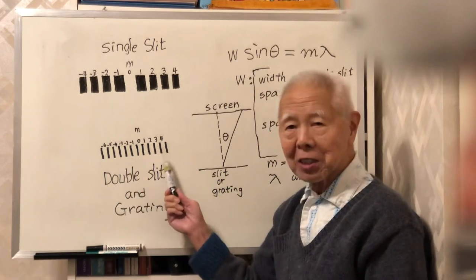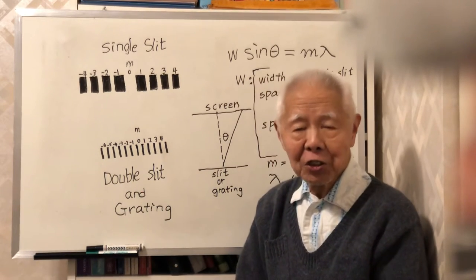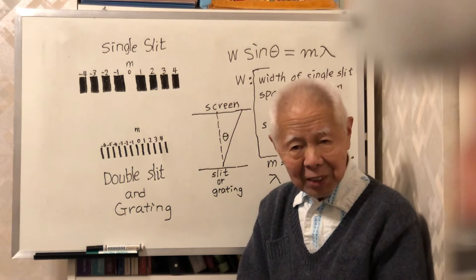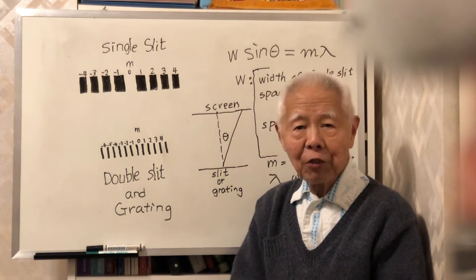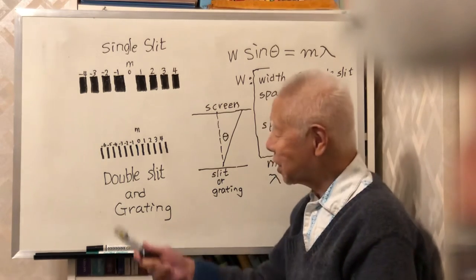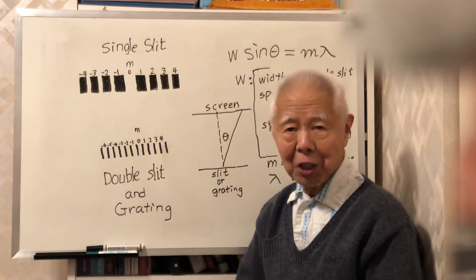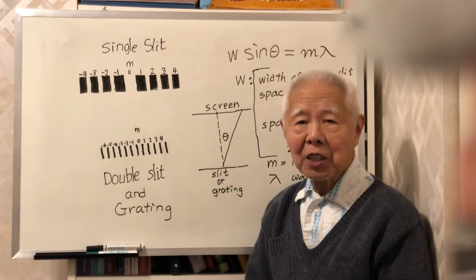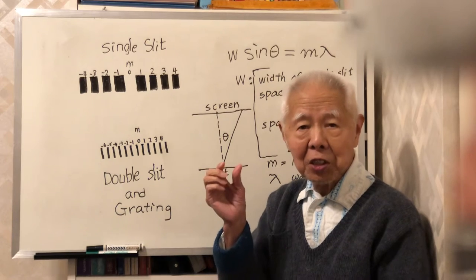The pattern for double slit looks like this. And for the third case, you have a diffraction grating. The pattern from a diffraction grating is the same as the double slit — in other words, the bright spaces have the same width.